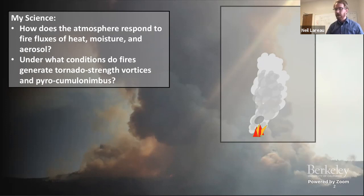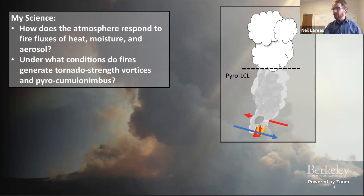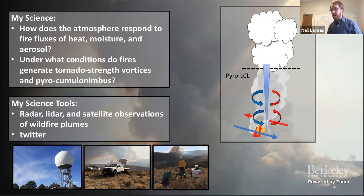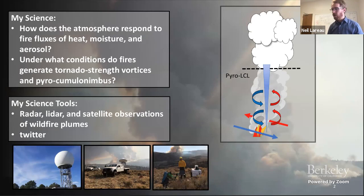Sometimes these fires generate deep bright white clouds extending to the top of the troposphere and generating lightning. These fires generate their own wind fields, and under what conditions can that wind field collapse into coherent tornado-strength vortices? The tools I use are primarily observational: radars, lidars, and to a lesser extent satellite observations of wildfire plumes. I've also added Twitter as a science tool — the crowdsourcing ability is amazing for understanding extremes of fire behavior that might have slipped through the cracks in the past.